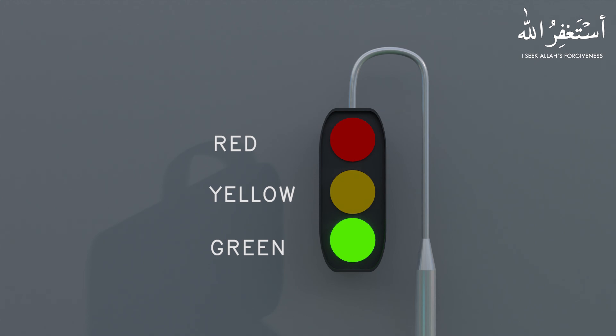The green light is connected at Y0 output of the PLC. Yellow and red lights are connected at Y1 and Y2 PLC outputs respectively. There are four steps in the traffic light sequence.